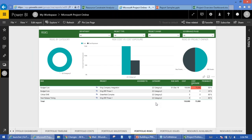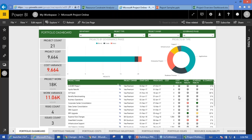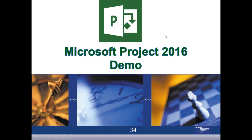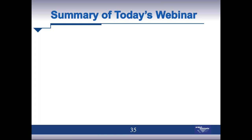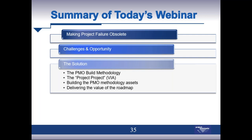Summarizing today's webinar on making project failure obsolete: we talked about the VIA methodology — Vision, Implement, Adopt — challenges and opportunities, bringing standards and templates together through PMO standards reflected in a Microsoft Project solution, and a number of ways the solution supports the development of a project management office.